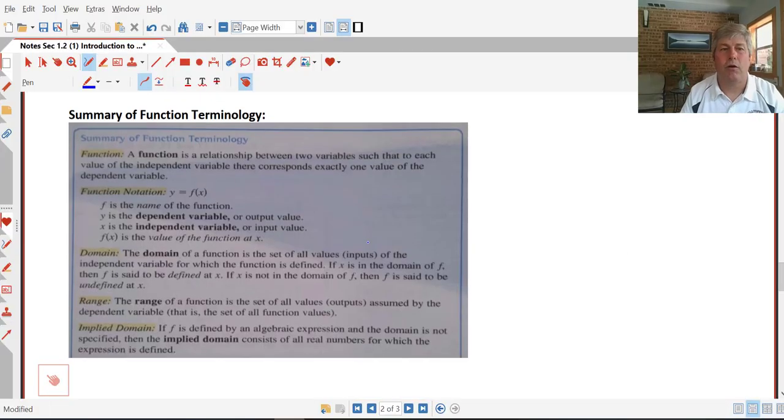So finally, at the end of our notes here, we've got a summary of function terminology. Remember that a function is a relationship between two variables such that to each value of the independent variable or our x, there corresponds exactly one value of the dependent variable y.